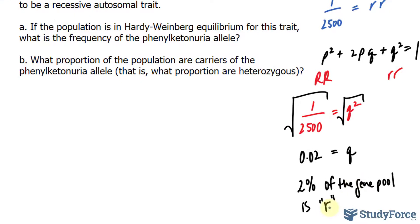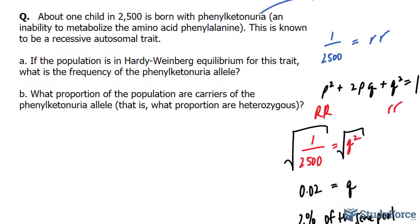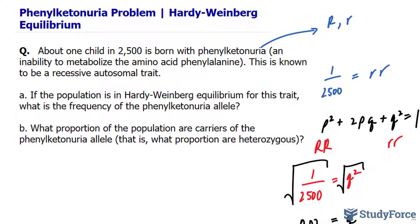In question B, what proportion of the population are carriers of the phenylketonuria allele? Now you're a carrier of this allele if you are heterozygous. So you have a healthy gene inherited from one parent and a non-healthy gene inherited from the other. If you have one good gene, then it will mask the condition. So this time, they want the proportion of the population that are carriers only.